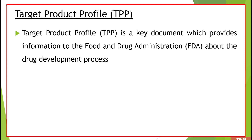Let's see what is TPP — that is, target product profile. It is a key document which provides information to the Food and Drug Administration about a drug development process. The entire QBD process is nothing but a document that we submit to the FDA, and that document gives information regarding the drug development process.